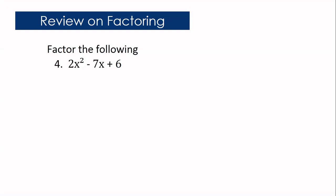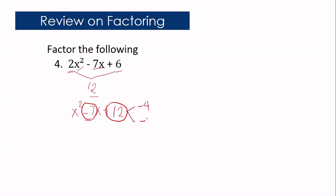How about the last example? 2x squared minus 7x plus 6. How does it differ from the last two examples? This time around, the value of a is greater than 1. If this is the case, you are going to multiply a and c. 2 times 6 is equal to 12. We write a new expression: x squared minus 7x plus 12. You are going to find factors of positive 12 that when combined give you negative 7. Negative 4 times negative 3 equals positive 12, and negative 4 plus negative 3 equals negative 7. So the factors are x minus 4 and x minus 3.